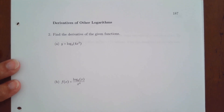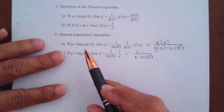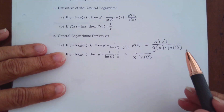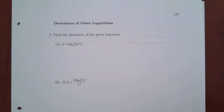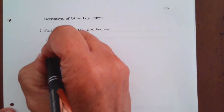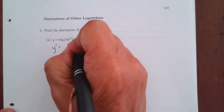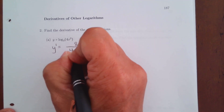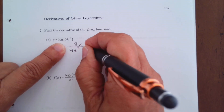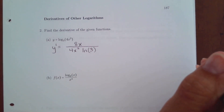Now we're doing derivatives of other logs — not natural logs. The rule is the same, except you tack on the natural log of the base in each denominator. For part a, this is log base 3. We still put the derivative of what's inside on top — that's 8x — over the function (4x squared) in the bottom, but because it's not a natural log, we multiply the denominator by the natural log of 3. That's the only difference.